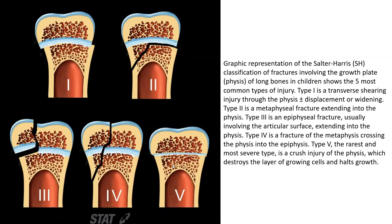These are the schematics to show you the five types of Salter-Harris fracture. Type 1 is a transverse shearing injury through the physis, plus or minus displacement or widening. Type 2 is a physeal fracture that involves the articular surface and extends into the physis.